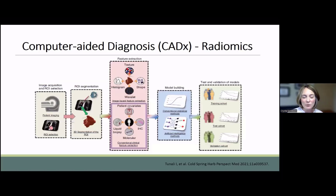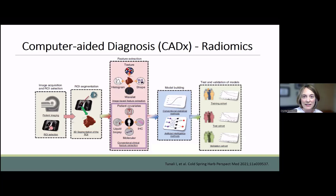With the advent of radiomics in the early 2000s, CAD moved from detection to diagnosis. Radiomics combines the fields of radiology and oncology to produce models that can be used for diagnosis and prognosis. Radiomics recognizes that there is much more information contained within an image than what can be perceived by the human eye. It is quantitative image analysis, looking at features such as texture or the heterogeneity among pixels within an image.